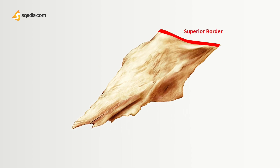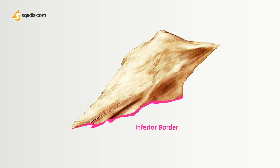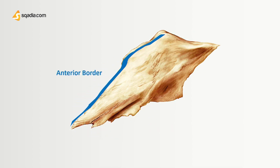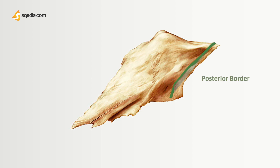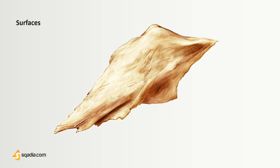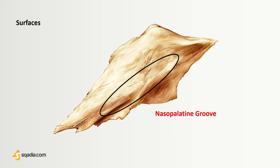If you have a closer look, there is a superior border, an inferior border, an anterior border, and a posterior border. On each surface, there is an anterior inferior groove present for the passage of the nasopalatine nerve, named the nasopalatine groove. The lateral surface on each side is covered by a mucous membrane.